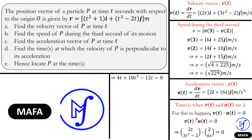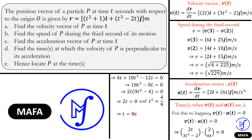Doing the dot product: 2t × 2 = 4t, and (3t² − 2) × 6t = 18t³ − 12t. Setting 18t³ − 8t = 0 and factoring, we get 2t(9t² − 4) = 0. This gives t = 0 or t² = 4/9, so t = 2/3 seconds. At t = 0 and t = 2/3, the velocity and acceleration are perpendicular.